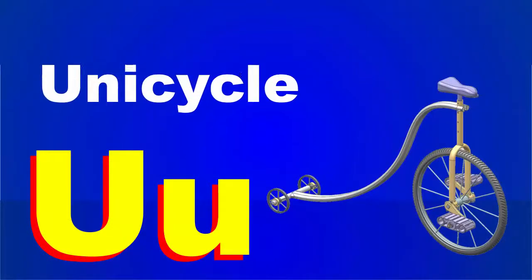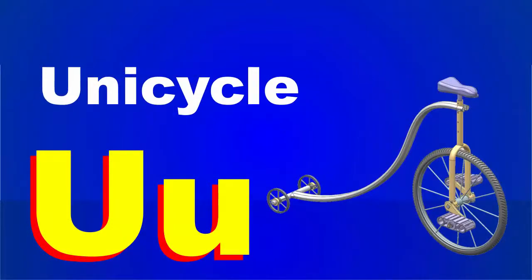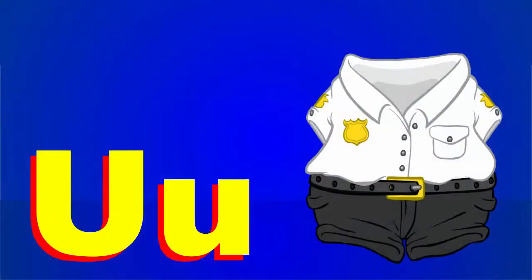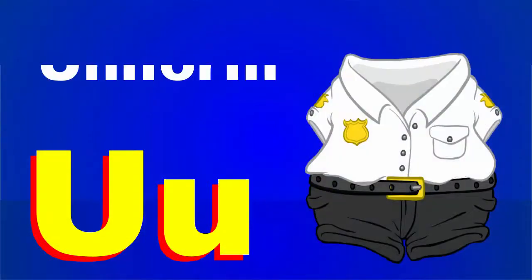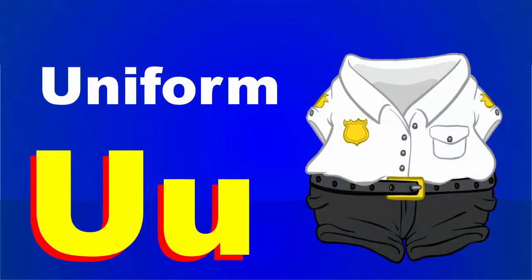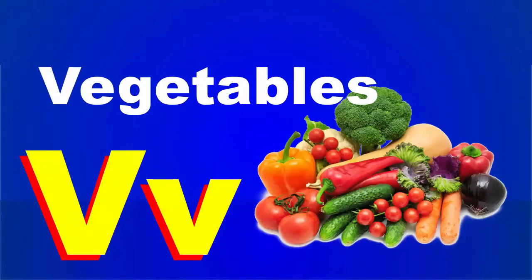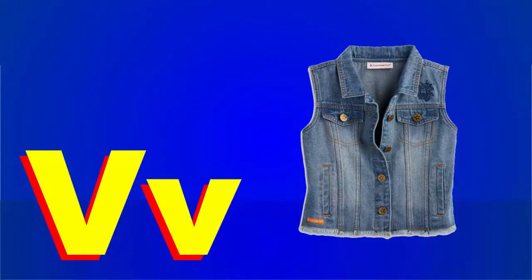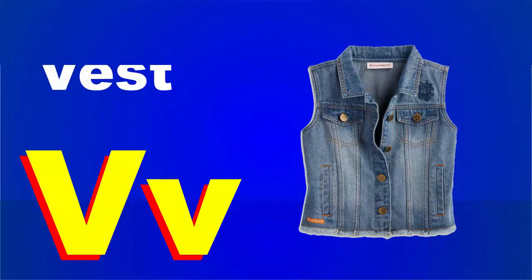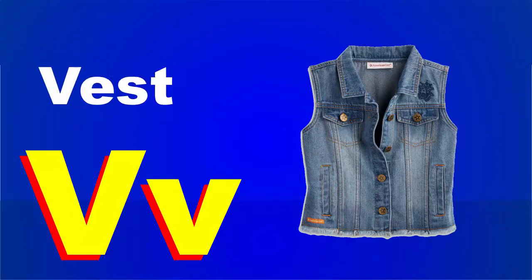U is for unicycle. U is for uniform. V is for vegetables. V is for vest.